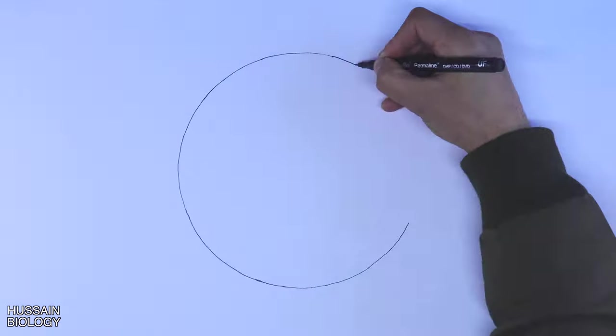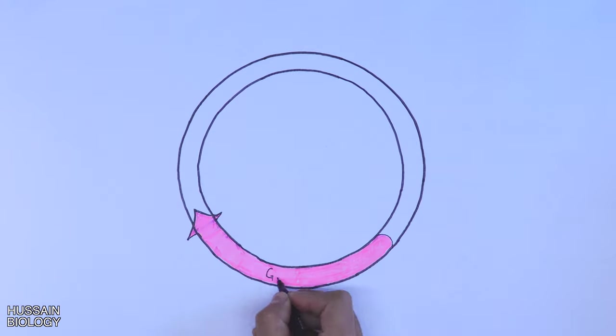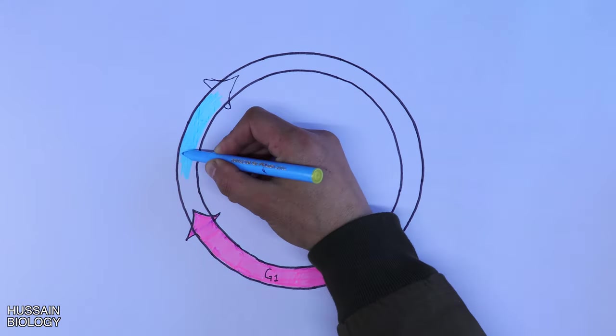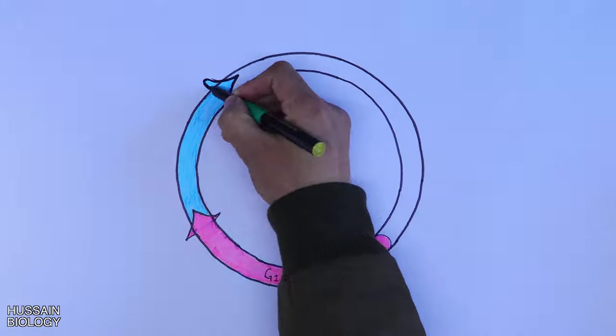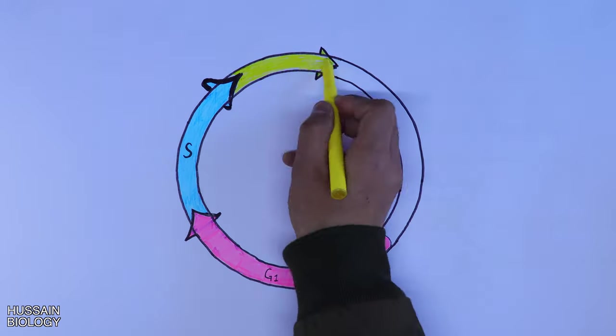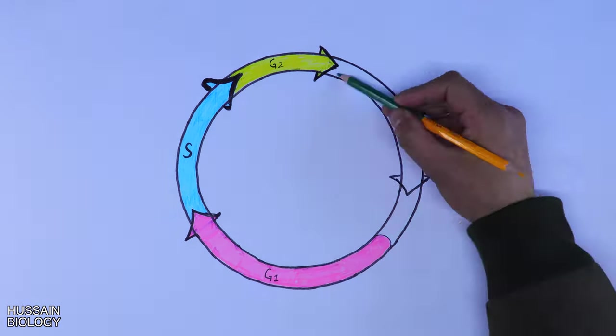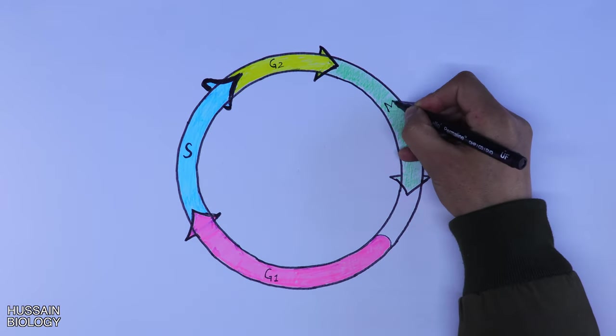Now let's see the cell cycle in detail. Here in the diagram we have the G1 phase of interphase, followed by the S phase, and then we have G2 phase. This concludes the interphase. After that we have M phase, which is followed by cytokinesis.